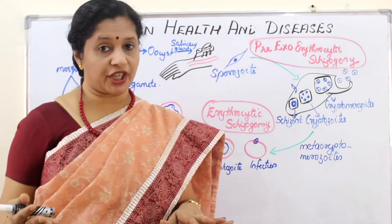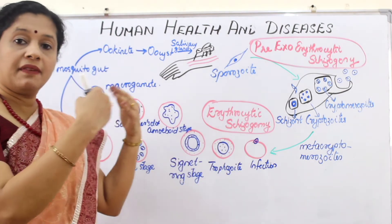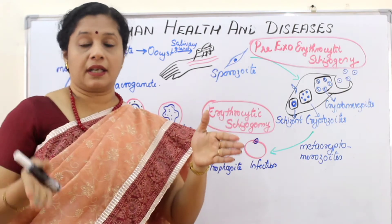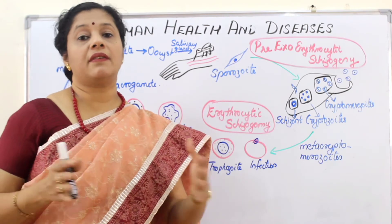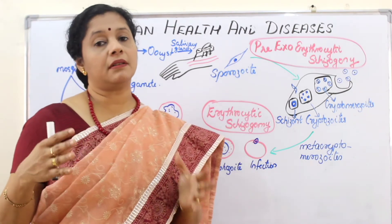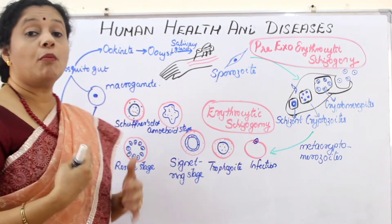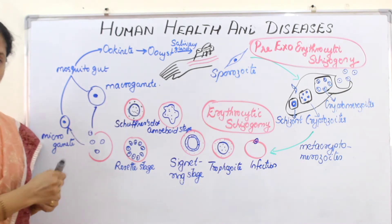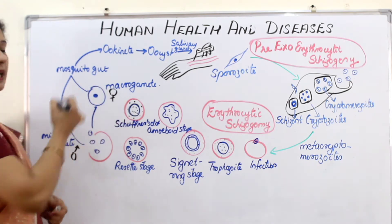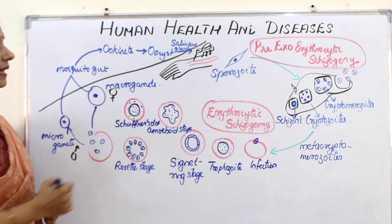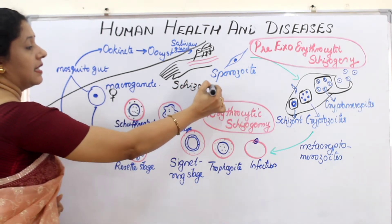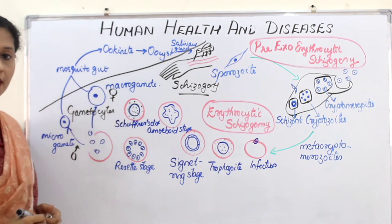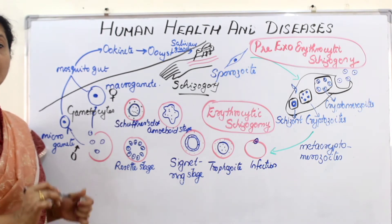The released merozooids infect other RBCs, undergo all the same stages, multiply, rupture, and come out — causing a periodic recurrence of fever and chills, which are the characteristic symptoms of malaria. After a certain amount of multiplication, the cells undergo morphological change and gradually transform into two different types of gametes: microgametes (male) and macrogametes (female). Up to this stage everything happens inside the human body — this is called schizogony (the asexual stage). Though gametocytes form here, fertilization and sexual reproduction do not occur in the human host.